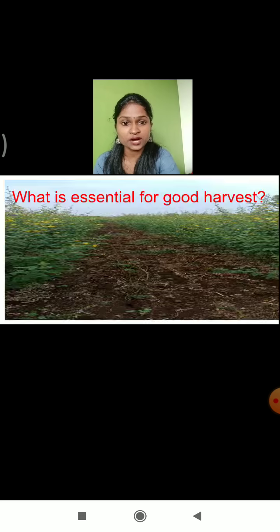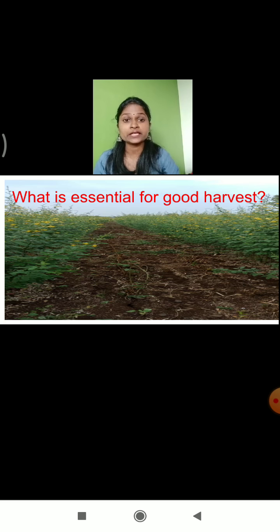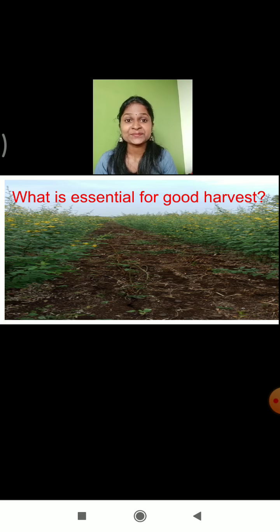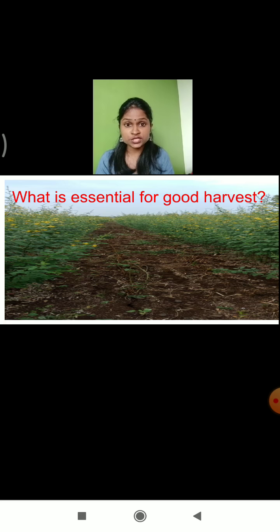How can we get a good harvest? What is essential for a good harvest? What materials are we supposed to provide to the agricultural field so that we can get a good crop? First of all, we need to provide water. Water is the most important factor. If we don't provide water, then the crop won't be able to grow. In dry conditions, we can't grow any crop or plant.